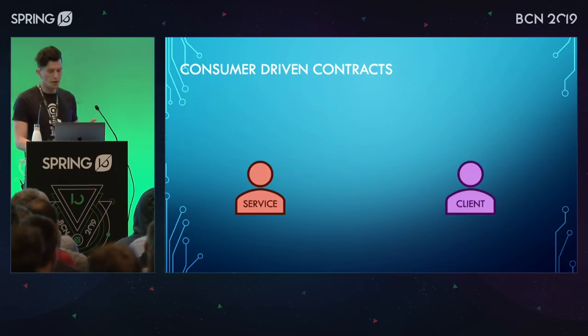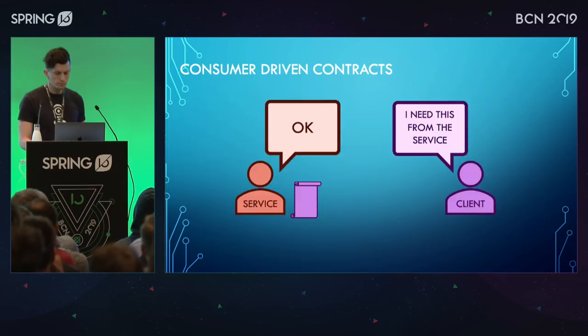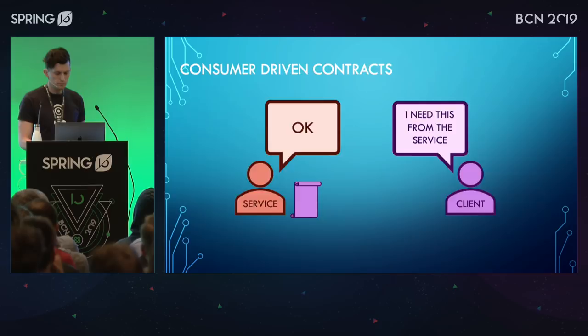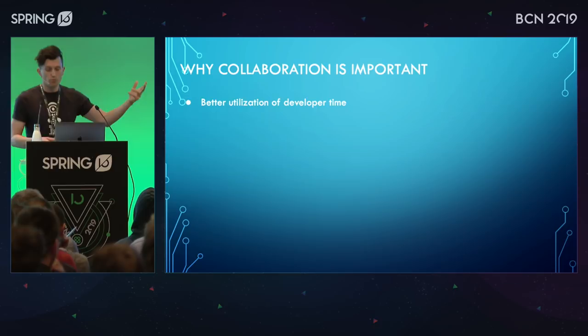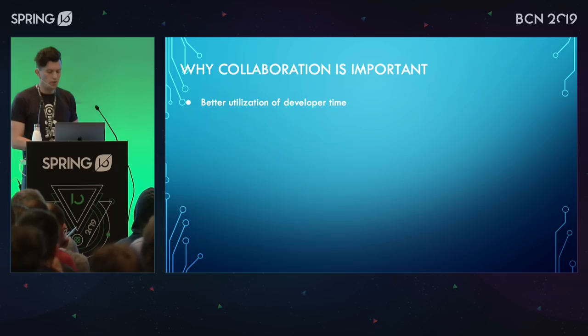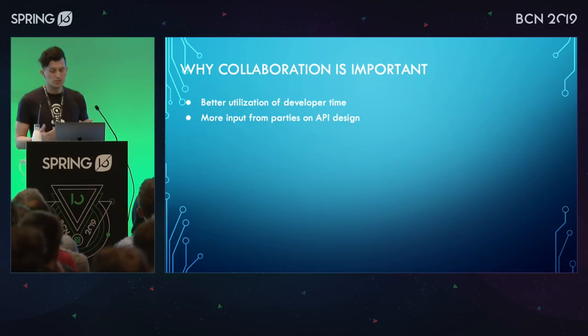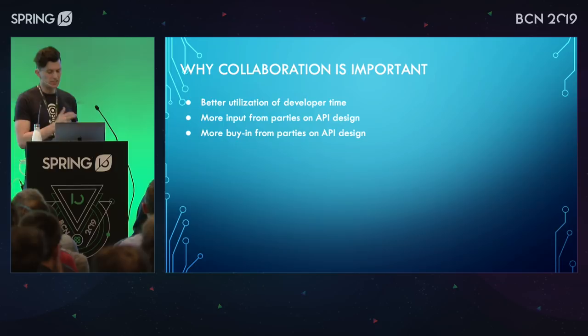Why is collaboration important? It gives you better utilization of developer time — whoever has time right now to write these contracts can be the one writing them, instead of it all being on one side. It also gives more input from all parties on API design, so instead of one opinion on what the API should look like, you get both consumers and producers working together on designing it. Hopefully this leads to more buy-in from all parties — instead of it just being dictated to you as a consumer, you can have a real say in how it all should look.